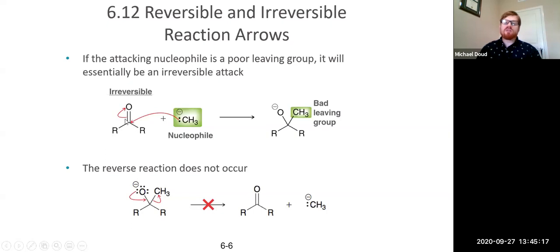And now all of a sudden we're here, and this is a really terrible leaving group. So the reverse process is not going to occur. Because this would be ridiculous. You'd have a new carbon oxygen pi bond form, and then just have a carbon ion form. This is extremely unstable. So that's just not going to happen.